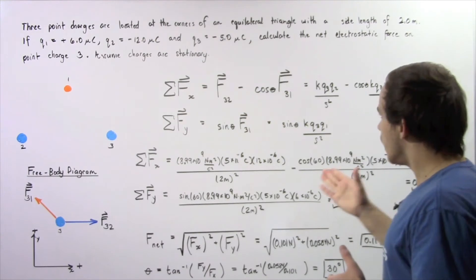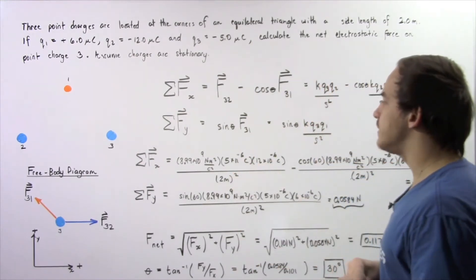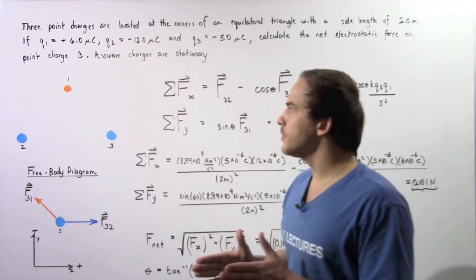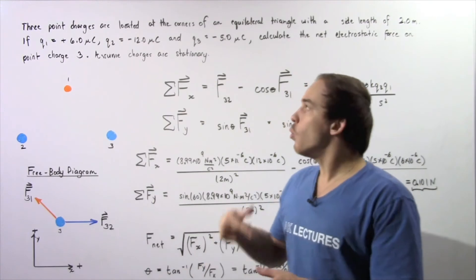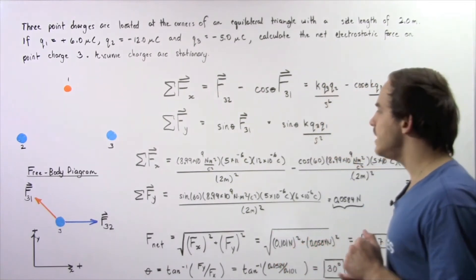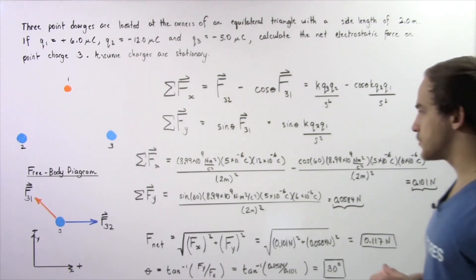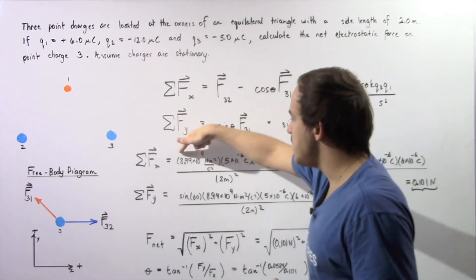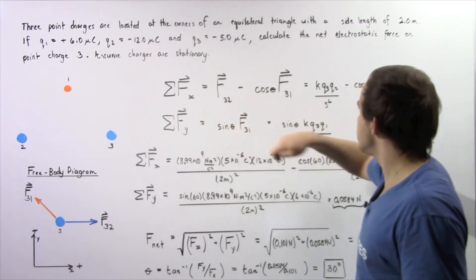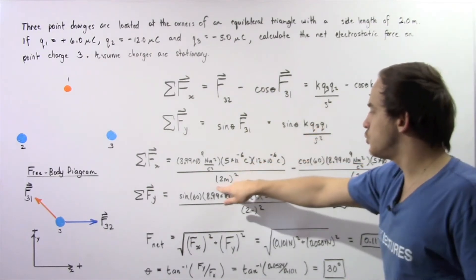Let's plug in our known values. k is 8.99 times 10 to the 9 N·m²/C². To use the charges, we convert from microcoulombs to coulombs: 1 microcoulomb equals 1 times 10 to the negative 6 coulombs. So q3 is 5 times 10 to the negative 6 C, q2 is 12 times 10 to the negative 6 C, and s is 2 meters, so s squared is 4.